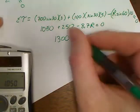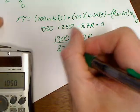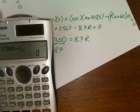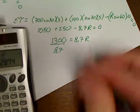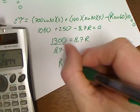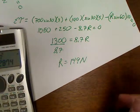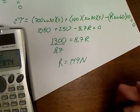And so now I can sit here and add this together. This is going to be 1,300 equals 8.7R. So now I can divide by 8.7. So 1,300 divided by 8.7 is equal to R is 149 Newtons on this made-up problem. So now I've got my R.